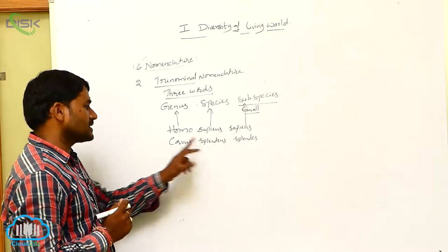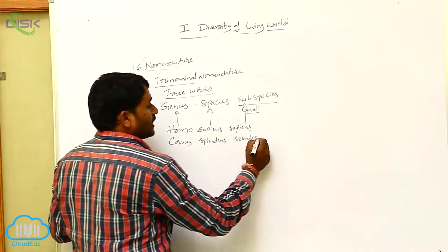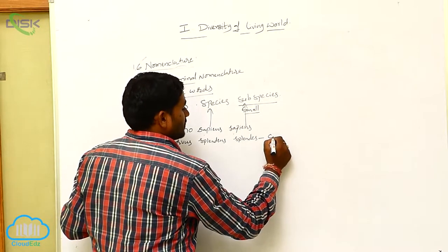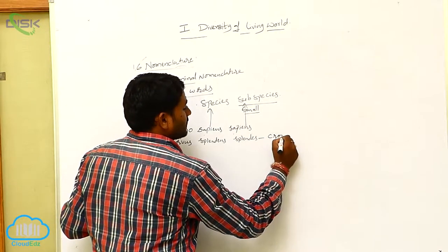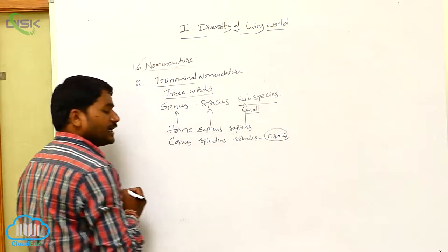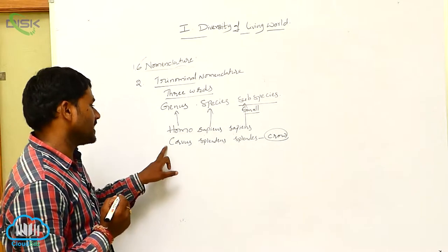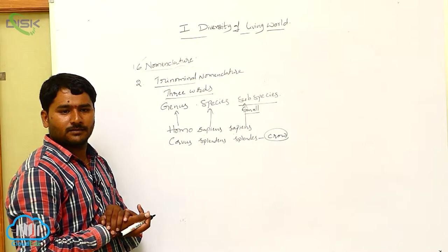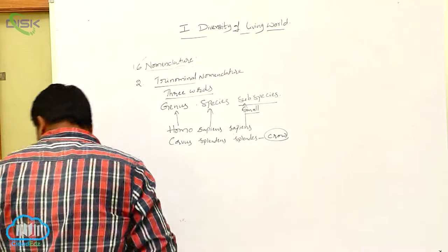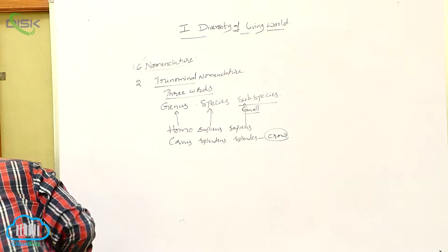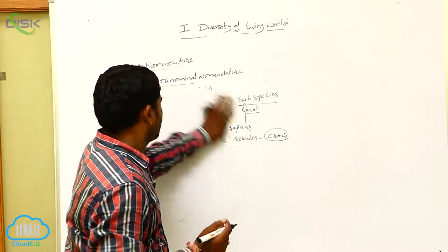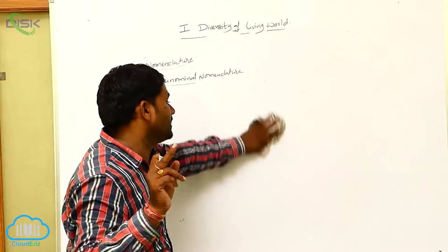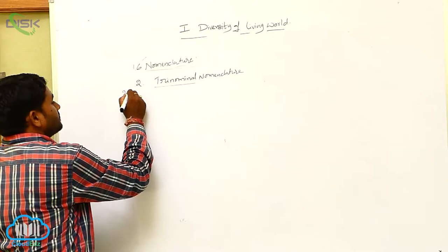Corvus splendens splendens is also an example of trinomial nomenclature. This is the scientific name of the crow found in India and Pakistan. So this is about trinomial nomenclature, which is also a very important topic for exam questions.